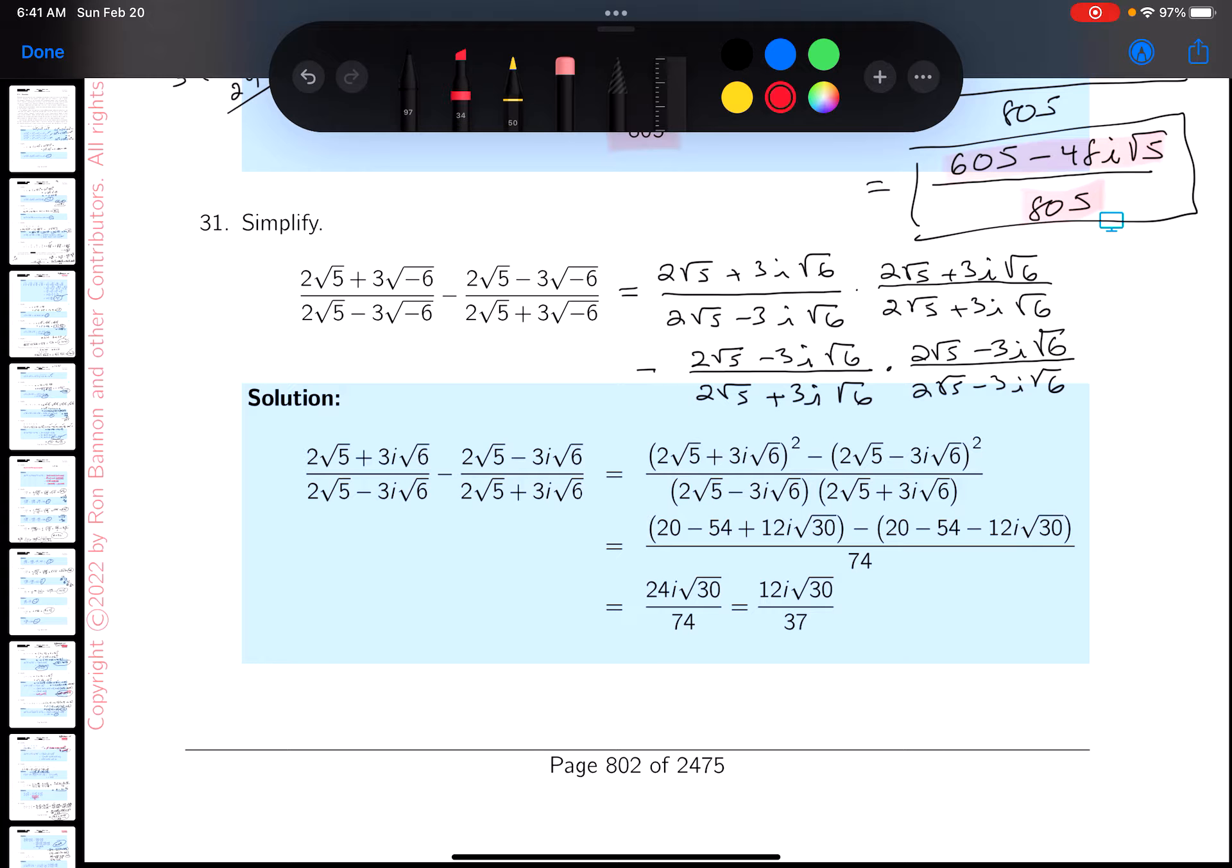I want to point out that this denominator here and this one over here is going to be identical. They both involve a factor of 2 root 5 plus 3i root 6 and another factor of 2 root 5 minus 3i root 6. So I'm just going to do it once. It's really a conjugate problem, so it's pretty easy to do.